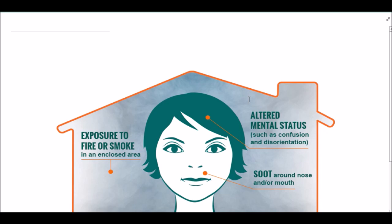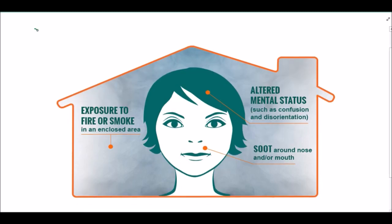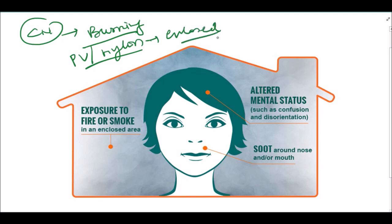Cyanide poisoning is seen due to burning of polyurethane or nylon cloths in enclosed spaces, due to exposure to fire or smoke in enclosed area. Suddenly there is altered mental status or confusion or disorientation, and there may be soot particles around the nose and mouth.